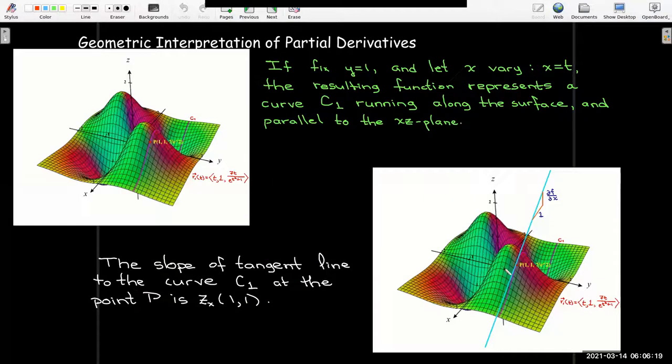So now I have my curve, I've got a point there, I know there's a tangent line to that curve. The slope of that tangent line is the value of the partial derivative at that given point.